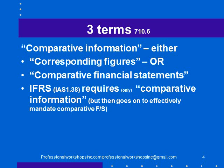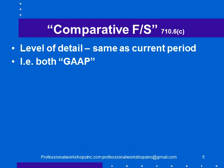There are three terms in ISA 710 paragraph A6. The first — comparative information — we don't really need to focus on because it means both. Comparative information is either corresponding figures or comparative financial statements. IFRS, specifically IAS 1.138, requires only comparative information, so it will be a regulator that tells us it has to be comparative financial statements. Though if you read the rest of IFRS, every section effectively mandates comparative financial statements for everything. So what are comparative financial statements? The level of detail is the same in both columns as for the current period — both are in accordance with the accounting framework.